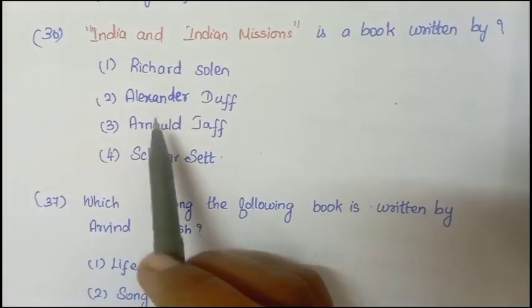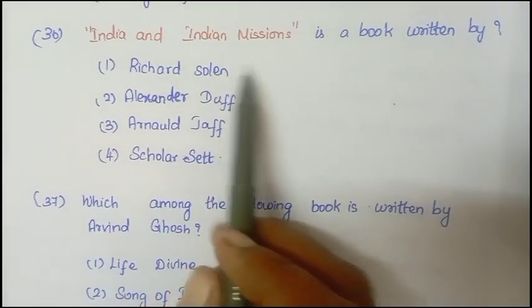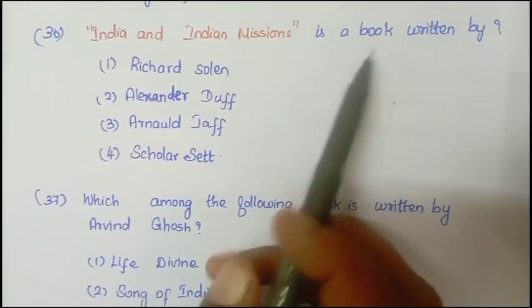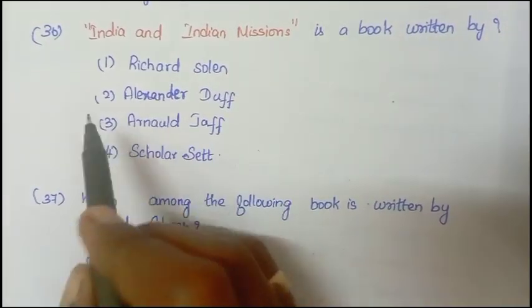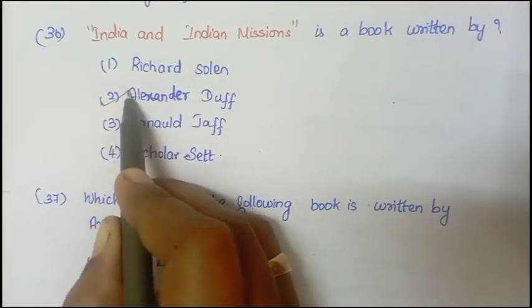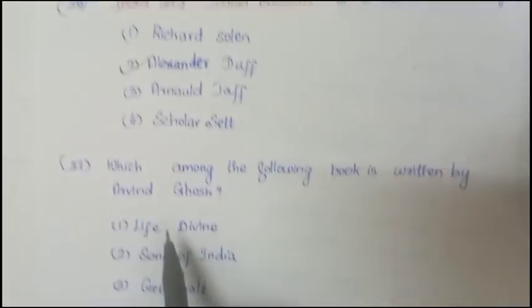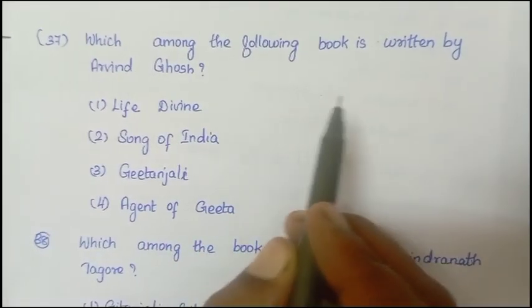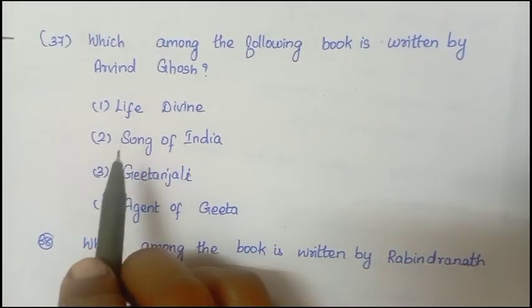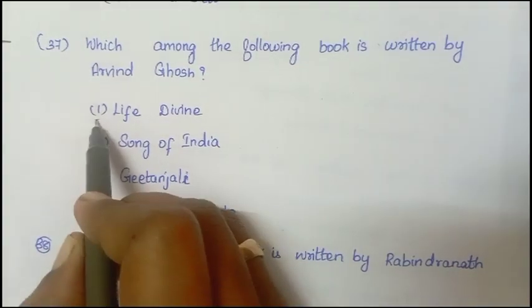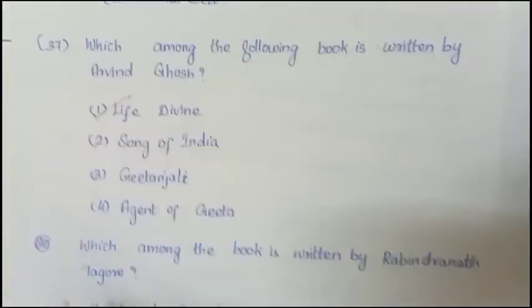Next question: India and Indian Missions is a book written by Alexander Duff. Next question: Which among the following books is written by Aurobindo Ghosh? Answer is Life Divine.